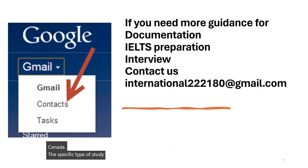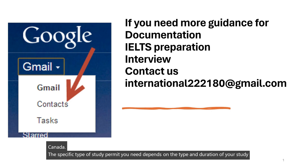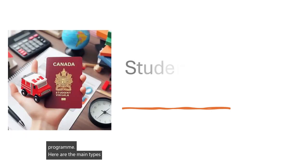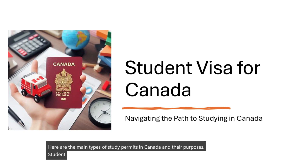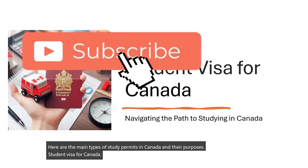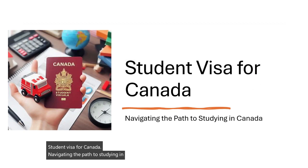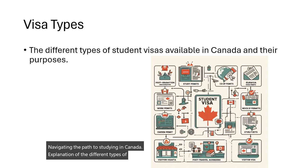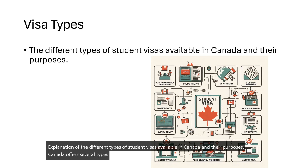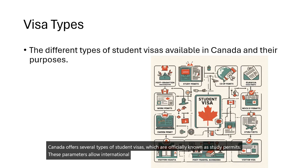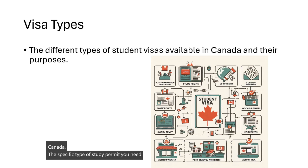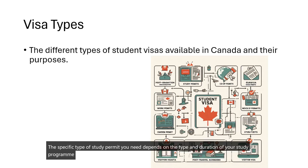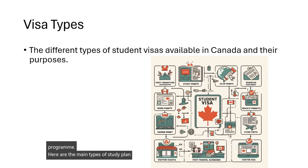Canada offers several types of student visas, which are officially known as study permits. These permits allow international students to study at designated learning institutions in Canada. The specific type of study permit you need depends on the type and duration of your study program. Here are the main types of study permits in Canada and their purposes.